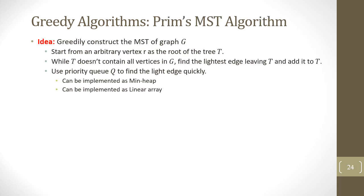Prim's algorithm is another algorithm that determines the minimum spanning tree of a graph. The idea is to greedily construct the MST by starting from an arbitrary vertex as the root of the tree. While the tree doesn't contain all the vertices, find the lightest edge leaving the tree and add it. To implement this, we use a priority queue to find the light edge quickly, implemented as a min-heap or a linear array.